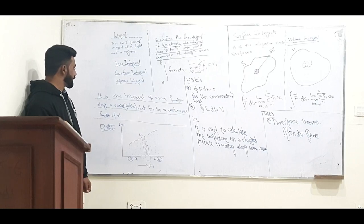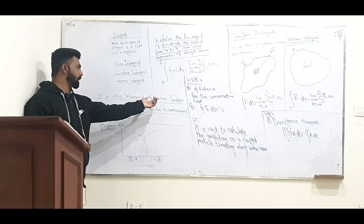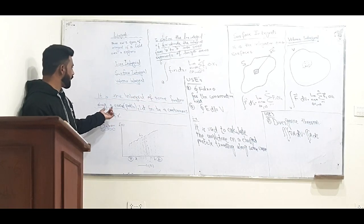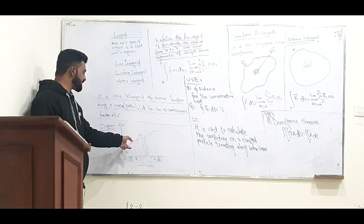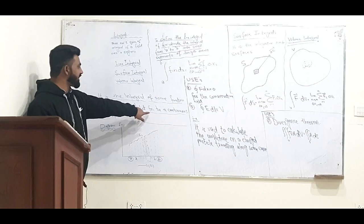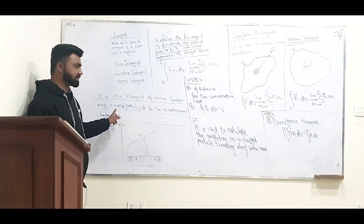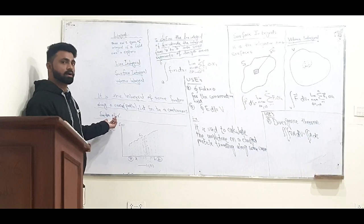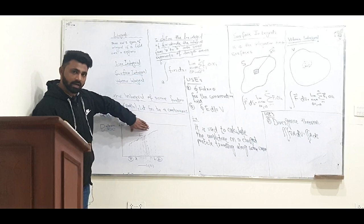So basically the line integral is the integral of some function along a curve. This curve is the path the body needs to cover. Let f(x) be a continuous function — remember, this function must be a continuous function of x. We can understand this from the diagram.